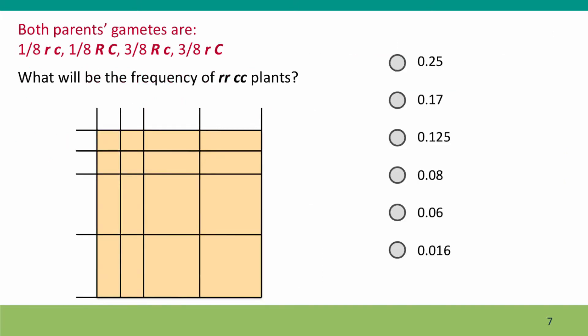Now, I've set this up as a question. What will be the frequency of little r, little r, little c, little c plants? I'll tell you now, there's a hard way to do this problem and an easy way to do this problem. I hope you figure out the easy way. The answer is 0.016, which I'll tell you is 1 over 64, which is, of course, one-eighth times one-eighth.